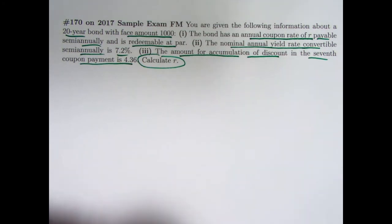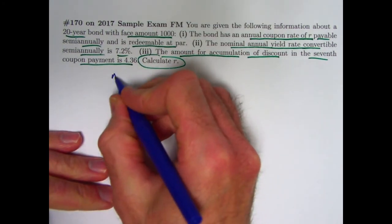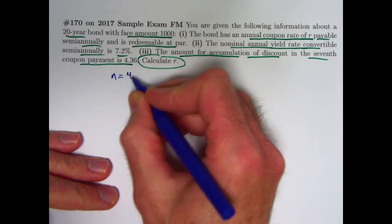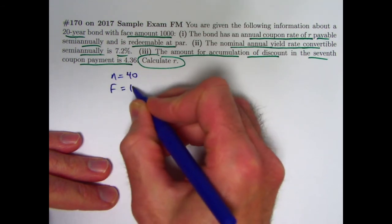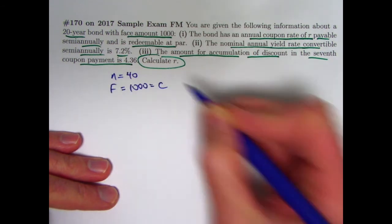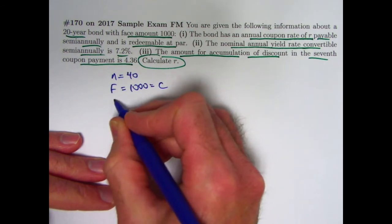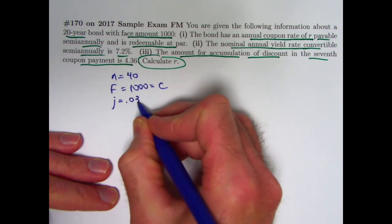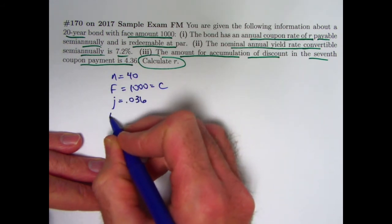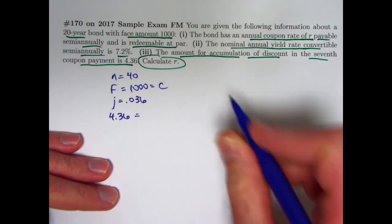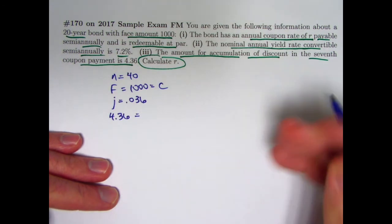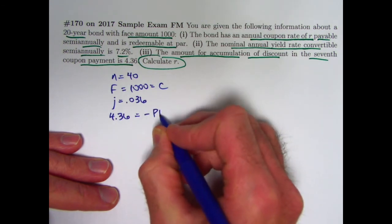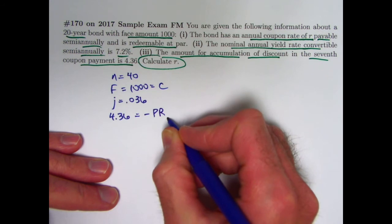I think probably the best thing to do here initially is just write down what we know. N is 20 times 2 because it's 20 years and it's semi-annual coupon payments, so that's 40. The face amount is $1,000 and that is the same as the redemption value. The effective semi-annual yield rate would be half of 7.2%, 3.6%. And we're also told that 4.36 is the amount of the accumulation of discount in the 7th coupon payment. Based on the notation and formulas from recent videos, this would be the same as negative PR7.